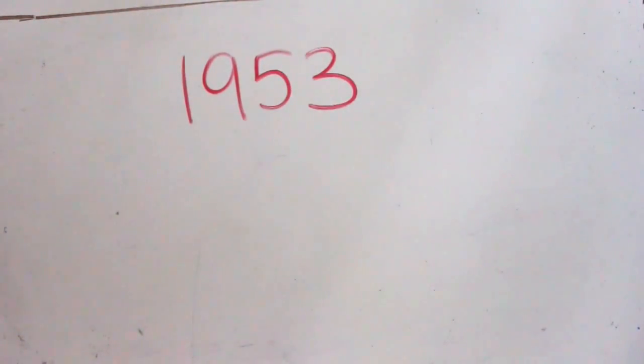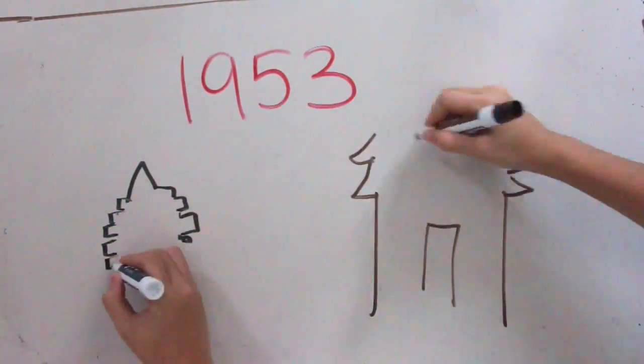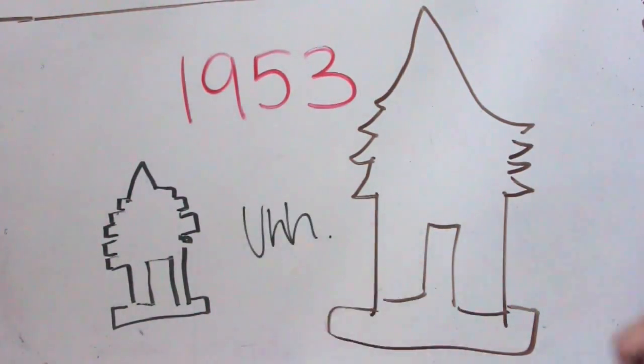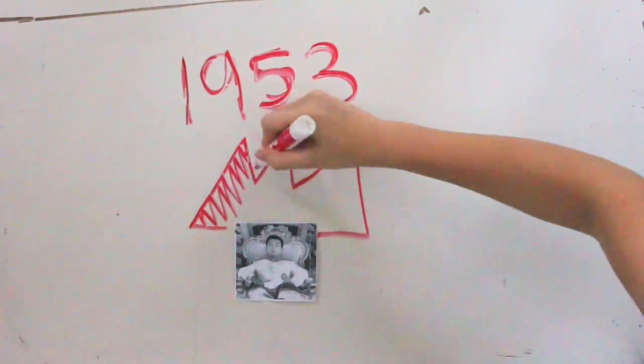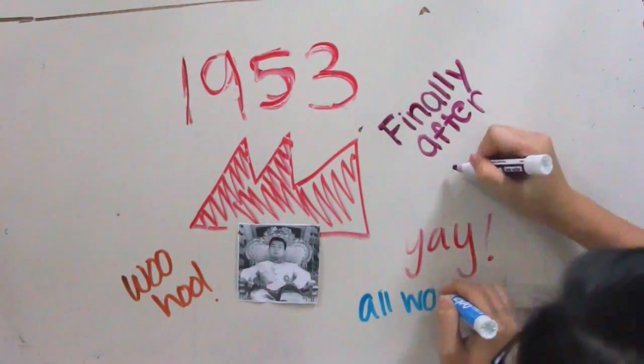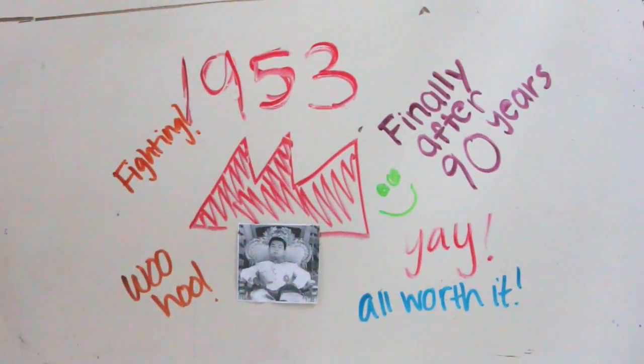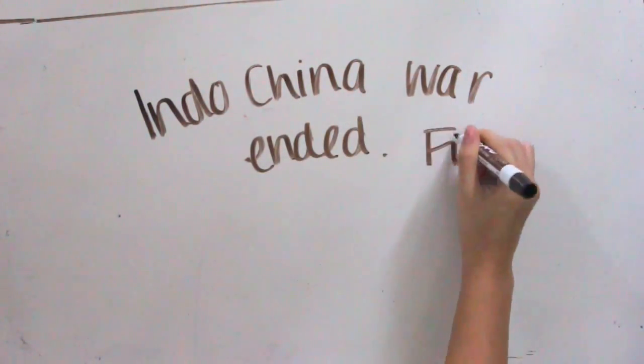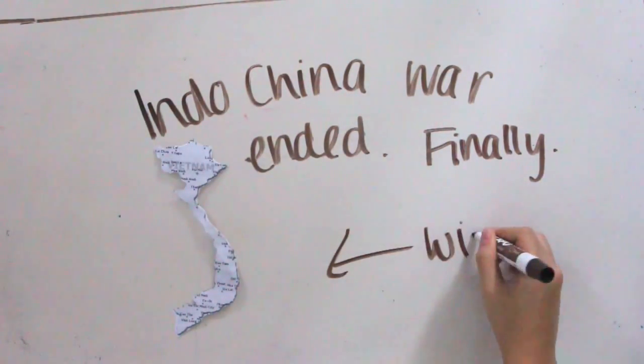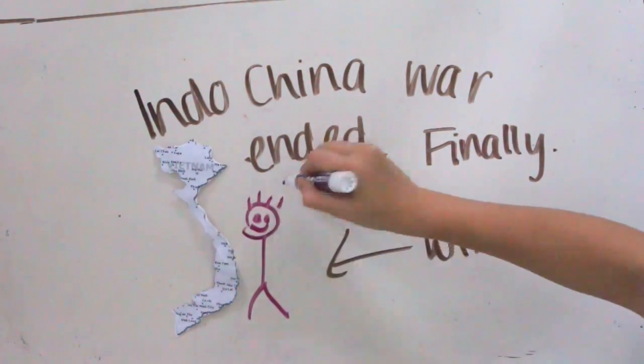In 1953, the French finally granted Cambodia its independence. King Norodom Sihanouk was able to march triumphantly back to Phnom Penh after gaining Cambodia's independence. A year after Cambodia's independence, the Indochina War finally ended, and Vietnam finally got its independence.